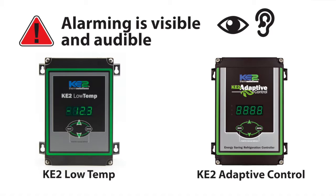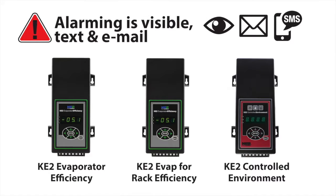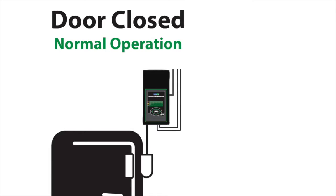If connected to a Key2Low Temp or Key2Adaptive control, there is a visible and audible alarm coming from the controllers. If connected to one of Key2Therm's ethernet-enabled controllers, like the Key2Evaporator Efficiency, not only is there a visible alarm, the controller can be configured to send a text message or an email to the appropriate person. Then once the door is closed, normal system operation resumes.